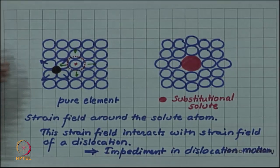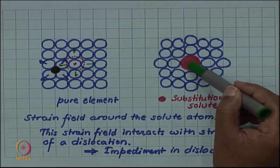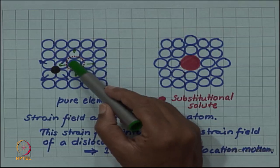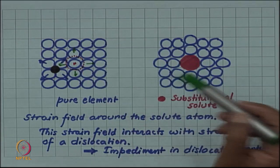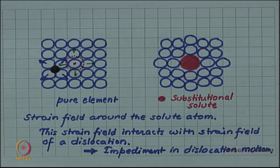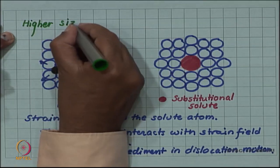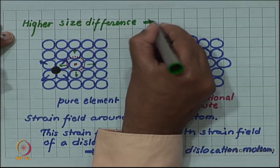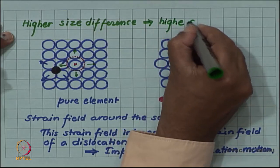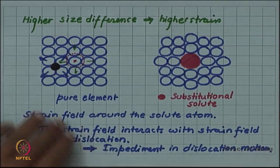An important factor here is the size difference. If the substitutional solute atom happened to be exactly the same size as the matrix element, there would be no strain. The strain is caused because of the size difference — so higher the size difference, higher the strain, and there will be more effective hardening due to the solute atom.